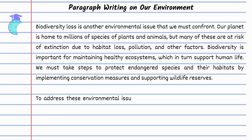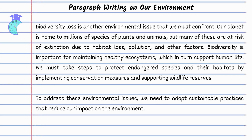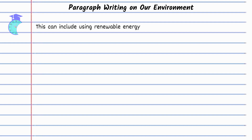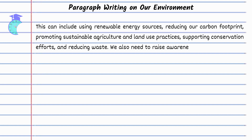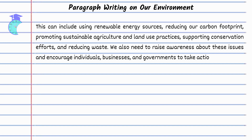To address these environmental issues, we need to adopt sustainable practices that reduce our impact on the environment. This can include using renewable energy sources, reducing our carbon footprint, promoting sustainable agriculture and land use practices, supporting conservation efforts, and reducing waste. We also need to raise awareness about these issues and encourage individuals, businesses, and governments to take action.